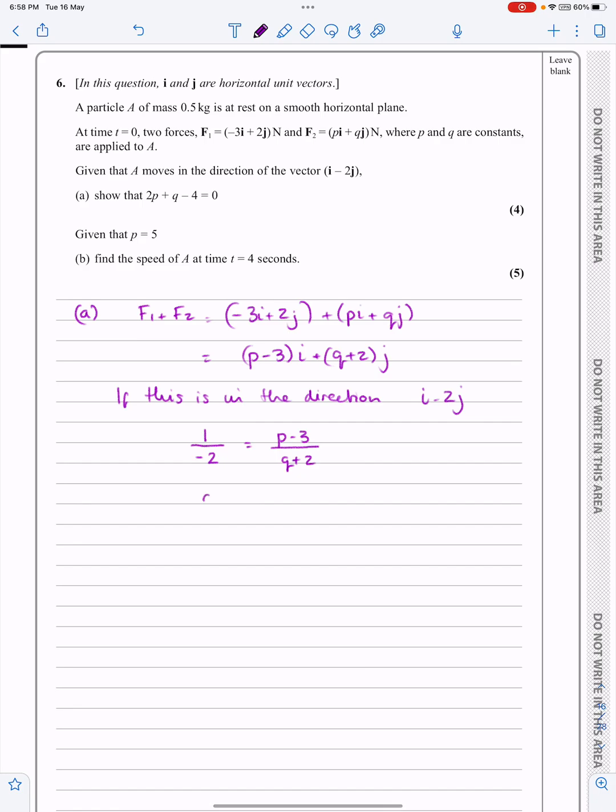So cross multiply. Q plus 2 is equal to, be careful when we're doing this, minus 2P plus 6. But let's face it, even if you made a mistake, you'd be able to go back and fiddle it all so that you get the right answer here. It is a proof, so just maybe do one line extra to what you'd normally do.